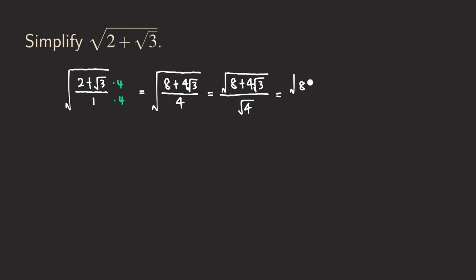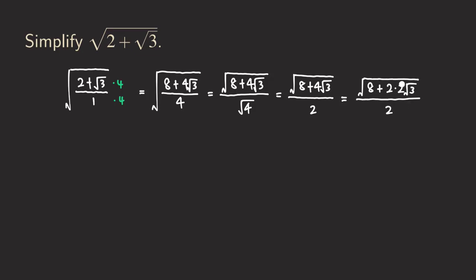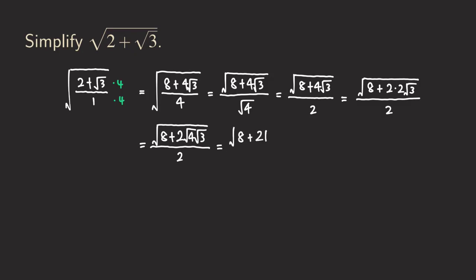Then we get a two in the denominator. You may say there's still a radical inside this radical. What we do next is rewrite the four as two times two, giving us two times two radical three. I want to move one of those twos into the inner radical. So we write it as eight plus — keeping one two in front — and turning the other two into radical four, times radical three. So we get the square root of eight plus two times square root of 12, all over two.